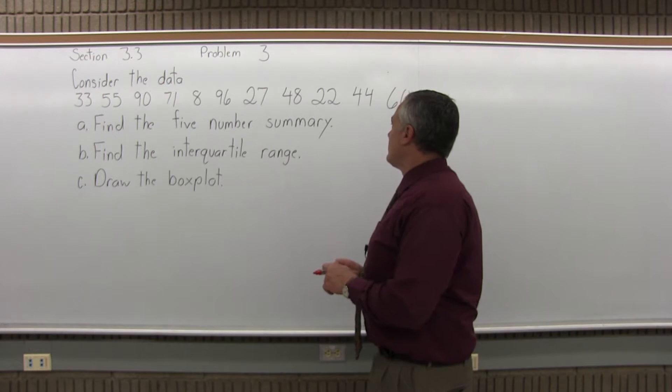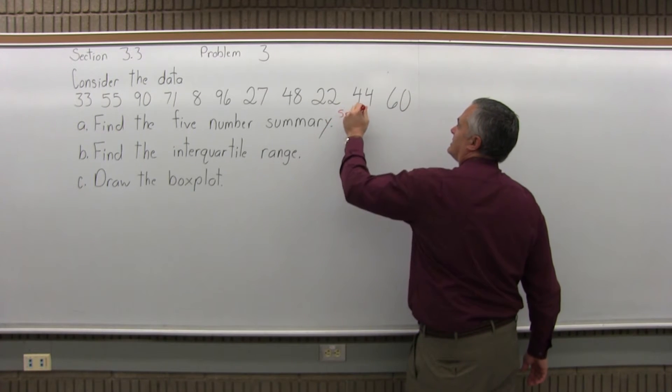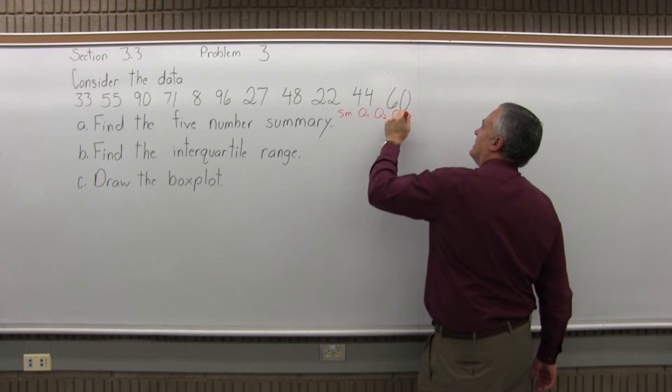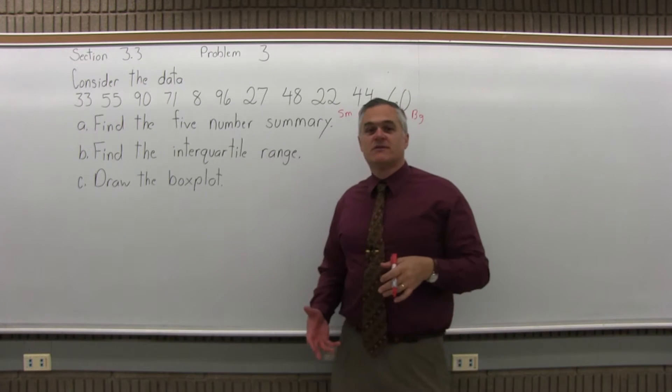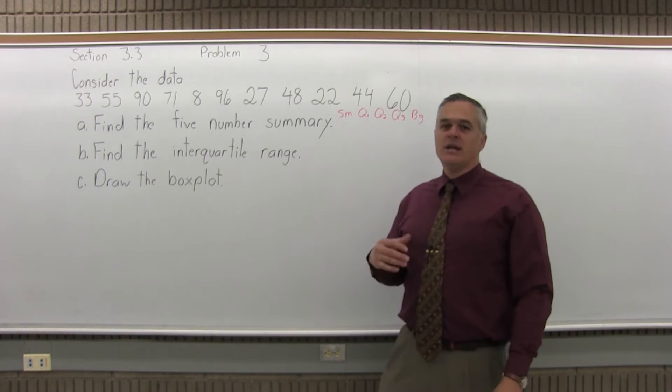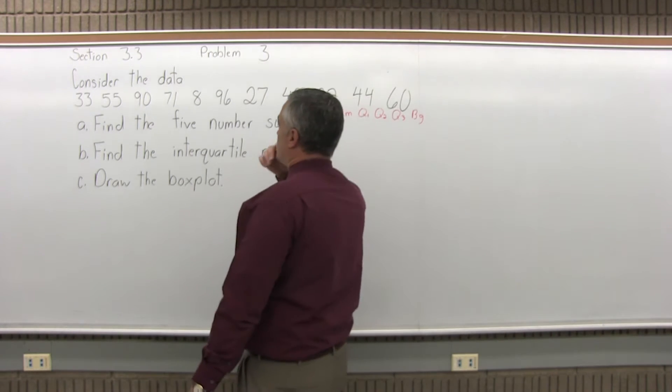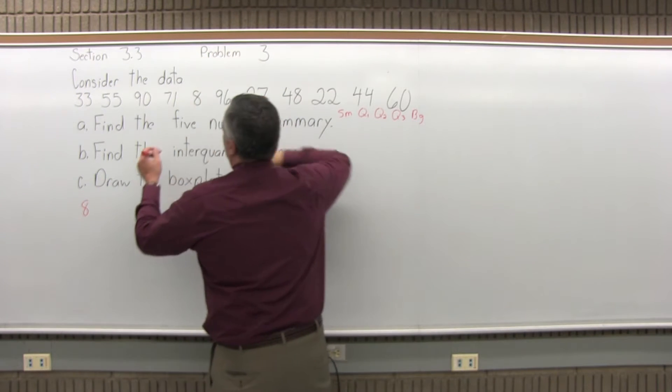So for the five number summary, we have to find the smallest data value, Q1, Q2, Q3, and the biggest. To do that, let me first put the list of data in order. That's important. You can't just start finding the middle of the list until it's in order. Right now it's just in a random order. So in order, it looks like my smallest one is 8.